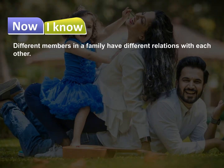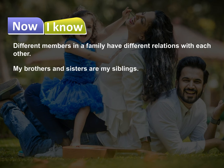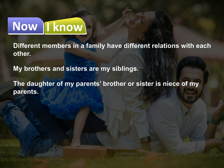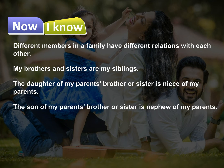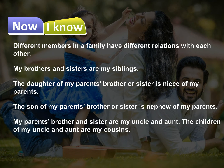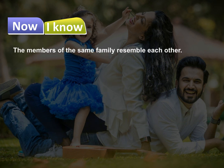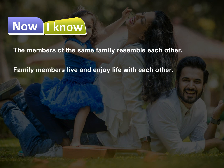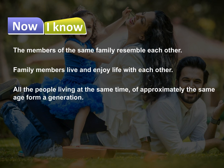Now I Know. Different members in a family have different relations with each other. My brothers and sisters are my siblings. The daughter of my parents' brother or sister is the niece of my parents. The son of my parents' brother or sister is the nephew of my parents. My parents' brother and sister are my uncle and aunt. The children of my uncle and aunt are my cousins. The members of the same family resemble each other. Family members live and enjoy life with each other. All the people living at the same time of approximately the same age form a generation.